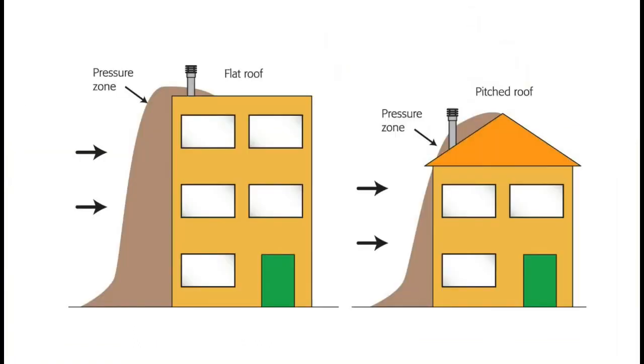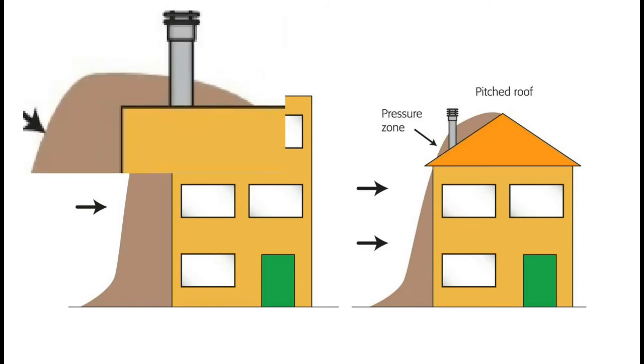Now around your house, depending on what way the wind is blowing, this is just an example, you have different pressure zones. And if you look on a flat roof, you have a slight pressure zone going about a third of the way across the roof up there.